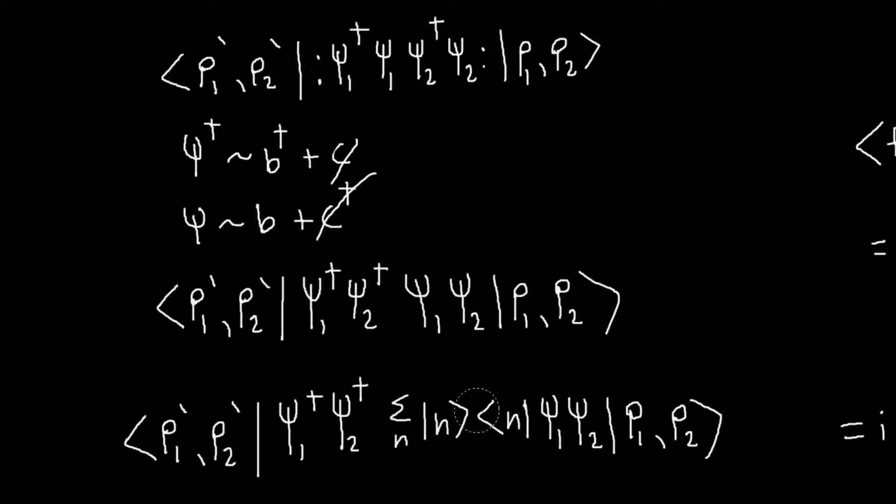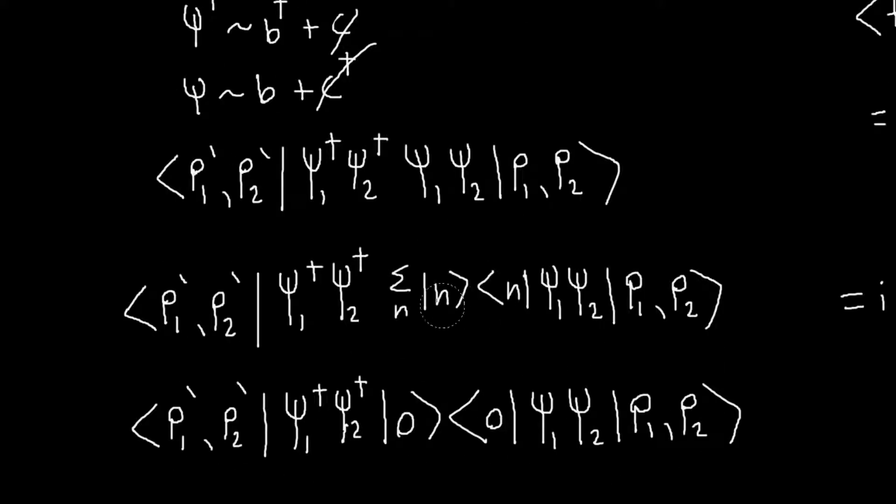But the only thing we need to realize is that the only non-zero term in all this sum will be for the ground state. Because if I have this ground state here, I will create two particles here. And so this is a two-particle state. So I need, it only has non-zero overlap with other two-particle states. So that's what these two psi daggers will do to the vacuum state. And similarly, I have a ground state here. So I need to annihilate these two-b particles with these two psi's to get a non-zero overlap here.